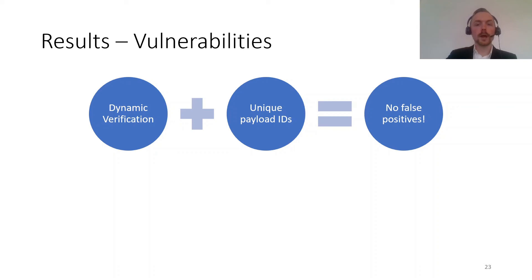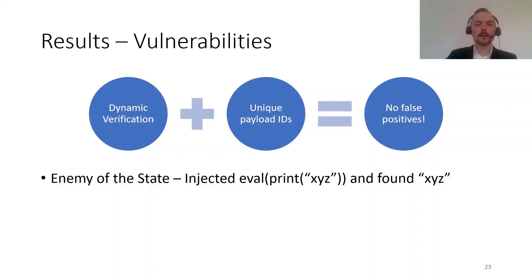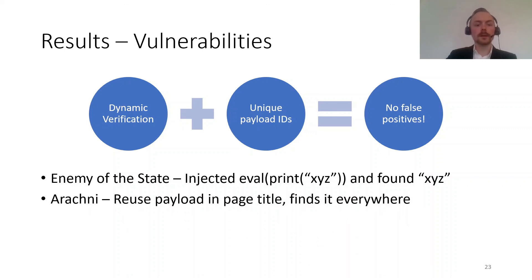Another positive feature of Black Widow is that we have no false positives in this empirical study, and in general a very low false positive rate. This is because we use dynamic verification together with unique payload IDs. Other scanners struggled with this — for example, Enemy of the State injects an eval statement that tries to print a string, then finds this string in the response and deems it a vulnerability, without verifying that the eval was actually executed. Arachne used dynamic verification but reused payloads, and after injecting a payload into the page title, it triggered for every page load, causing false positives on every subsequent input. By combining dynamic verification and unique payloads, we keep false positives to a minimum.